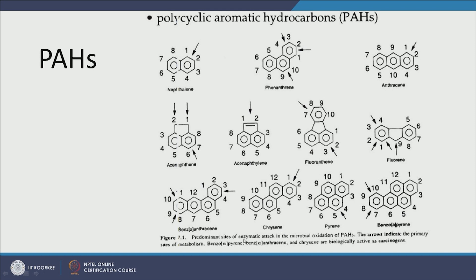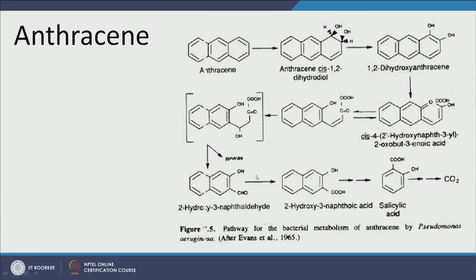Notably, benzo[a]pyrene, benzo[a]anthracene, and chrysene are carcinogens — and most PAHs are mutagens and teratogens that affect human and environmental health. If a human being is exposed to these compounds, they are very likely to develop cancer.